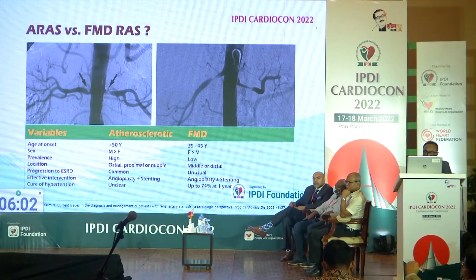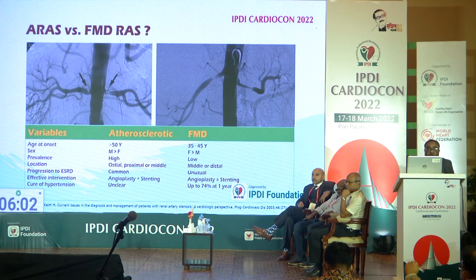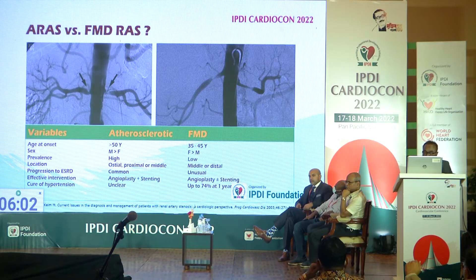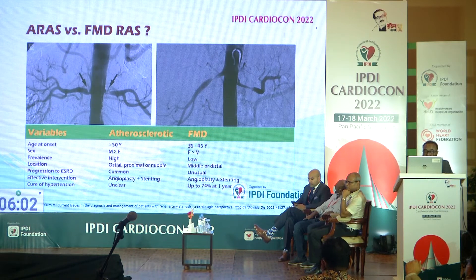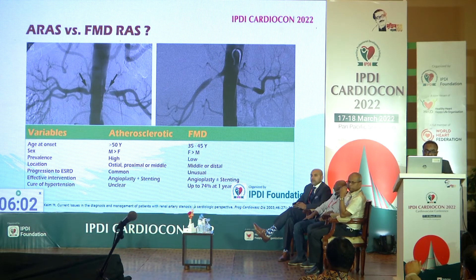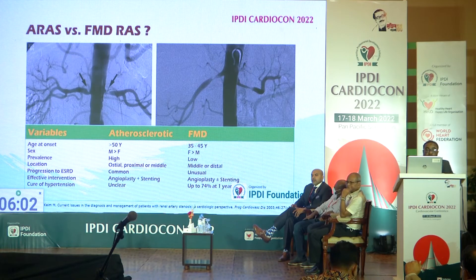We can differentiate atherosclerotic renal artery stenosis from fibromuscular dysplasia by onset: atherosclerotic mostly presents over age 50, while fibromuscular dysplasia presents at age 35 to 45. Atherosclerotic RAS is more common in males, has higher overall prevalence, and is mostly ostial in location, whereas fibromuscular dysplasia tends to be mid or distal.